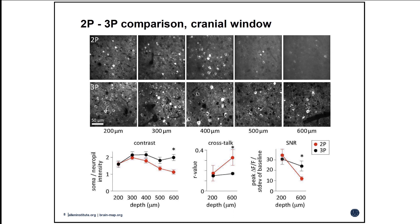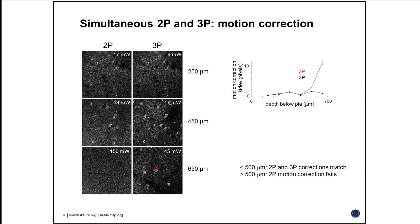What we end up with is an image pair where the two images are separated by only a millisecond — the time of a line. In the superficial locations the movies look nearly identical, but as you go deeper you get nice three-photon movies where you can see cells and activity, while in the two-photon image you're really lost. We found that this loss of contrast compromises our ability to motion-correct the movies and to segment the cells.